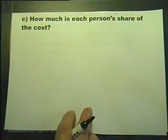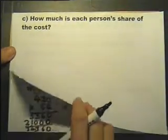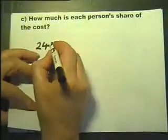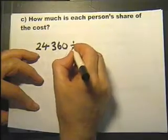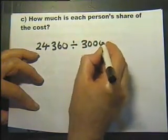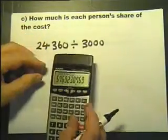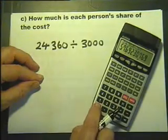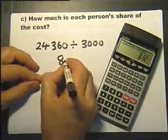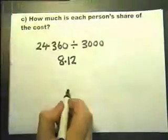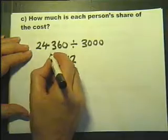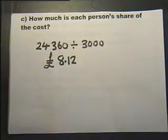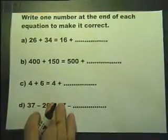Last it says how much is each person's share of the cost if they share it equally. So it's £24,000—what was it? £24,360 is the total amount for the coaches shared by the 3,000 people going. £24,360 divided by 3,000, and again appreciating that the answer is money, so let's not forget the pound sign.